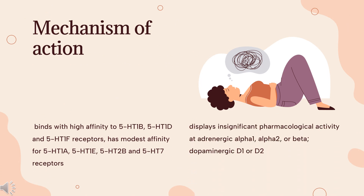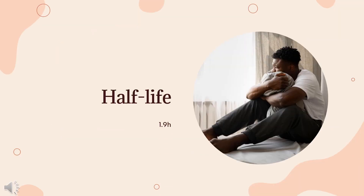Mechanism of Action: Sumatriptan is an agonist of 5-HT1B and 5-HT1D. This agonism leads to constriction of cranial blood vessels and inhibits the release of pro-inflammatory neuropeptides. Sumatriptan decreases carotid arterial blood flow, but increases blood flow velocity in the internal carotid artery and middle cerebral artery.